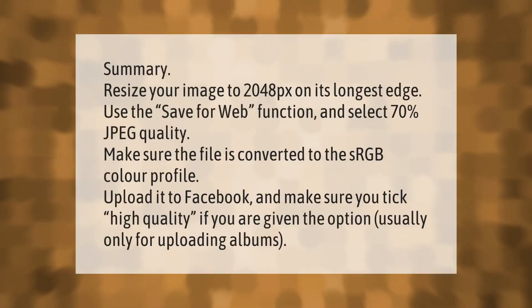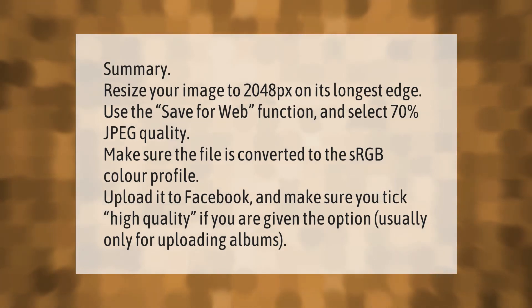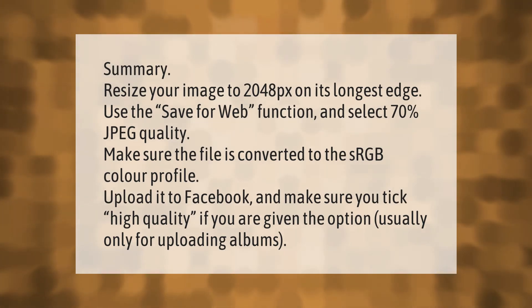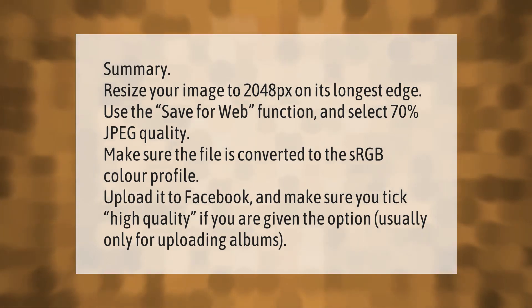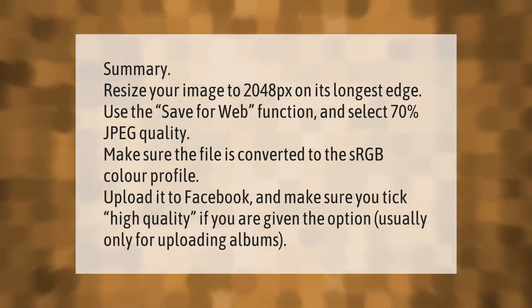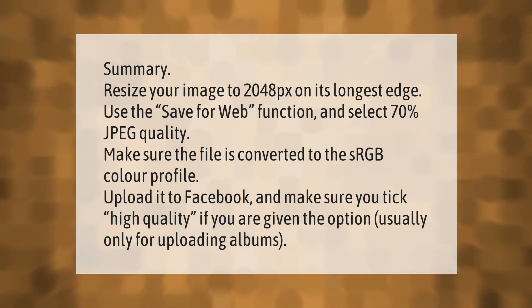Summary: resize your image to 2048px on its longest edge. Use the Save for Web function and select 70% JPEG quality. Make sure the file is converted to the sRGB color profile. Upload it to Facebook and make sure you tick 'High Quality' if you are given the option — usually only for uploading albums.